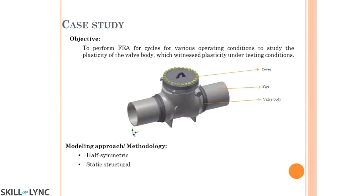I'll give you a case study on one of the realistic problems I faced in an oil and gas industry. We got a request regarding a valve — this is the valve body, this is a cover, and this is a pipe. The valve is connected to pipelines that transfer oil from Gulf countries to many parts. There should be no leakage. This is a check valve, which is unidirectional, so flow can happen only from one side.